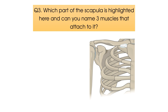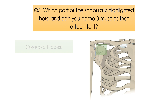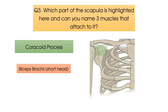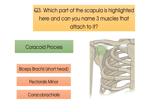Question number three: which part of the scapula is highlighted here, and can you name three muscles that attach to it? Time's up. The area highlighted is the coracoid process, which is where the short head of biceps brachii, pectoralis minor, and coracobrachialis muscles all attach.